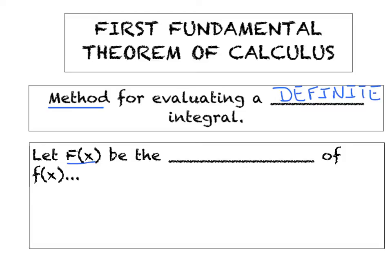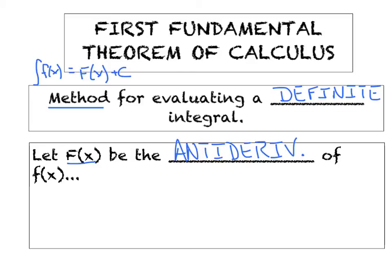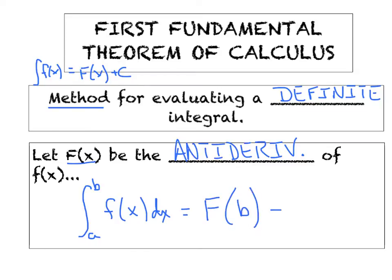Let capital F(x) — that's big F — be the antiderivative of little f(x). Big F is the antiderivative. So if it was an indefinite integral and I integrated little f, I would get capital F plus C. Applied to a definite integral: the definite integral from a to b of little f with respect to x is equivalent to the antiderivative evaluated at the upper bound minus the antiderivative evaluated at the lower bound. That's what we need to highlight in our notes tonight.